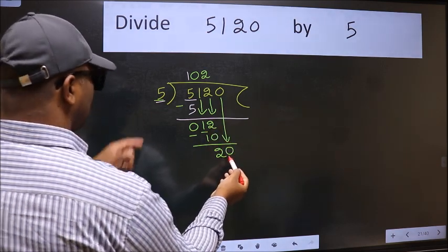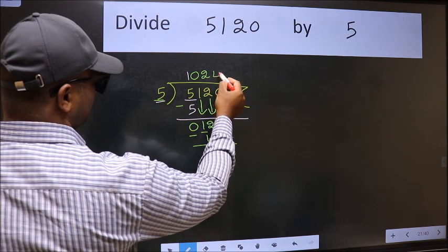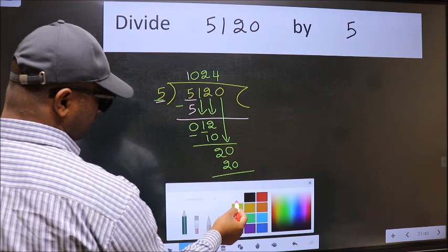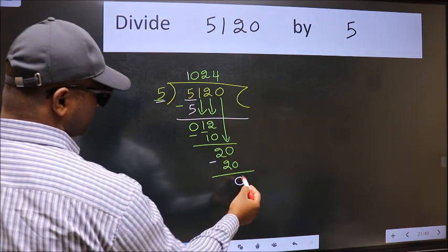Now 20. When do we get 20 in 5 table? 5, 4 is 20. Now we subtract. We get 0.